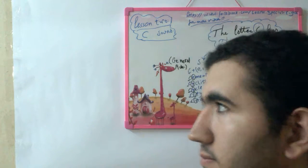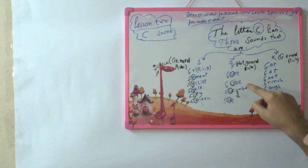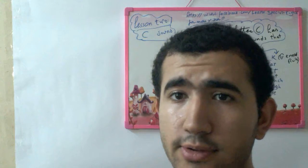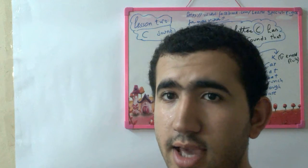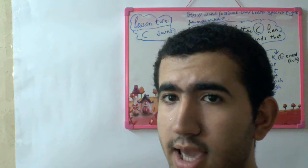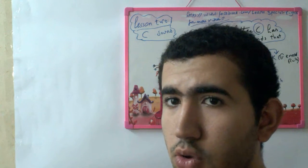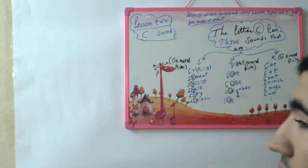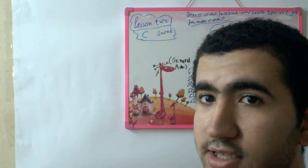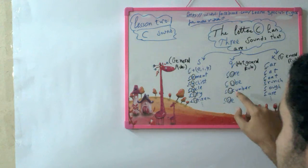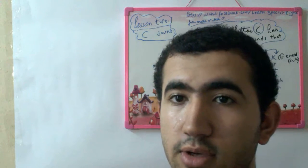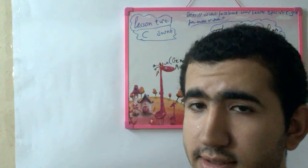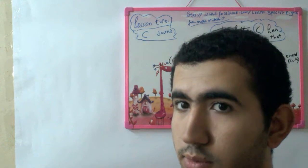Q — as in cure and cucumber. Remember, this is not a general rule. Most of the time it's pronounced as K. The first C in cucumber is pronounced as Q, but the second C is pronounced as K. That's why it's not a general rule, but the C letter does have a Q pronunciation. So remember that.